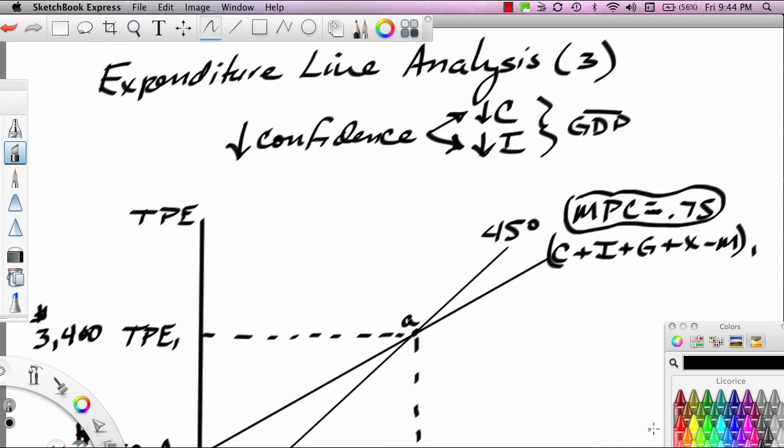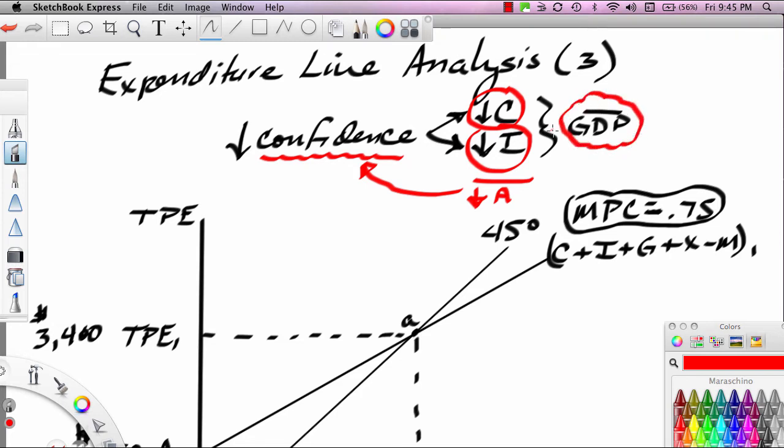This is where we start the analysis. We assume that there's been a drop in confidence, and this drop in confidence leads to a drop in consumption spending and a drop in investment spending. Notice that this drop in spending is actually a drop in autonomous spending. Why? Because the cause was something other than GDP. We're holding GDP constant at this point in the analysis.